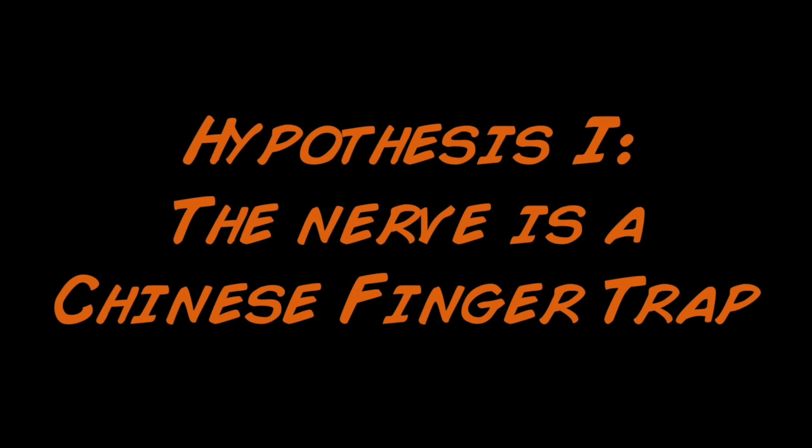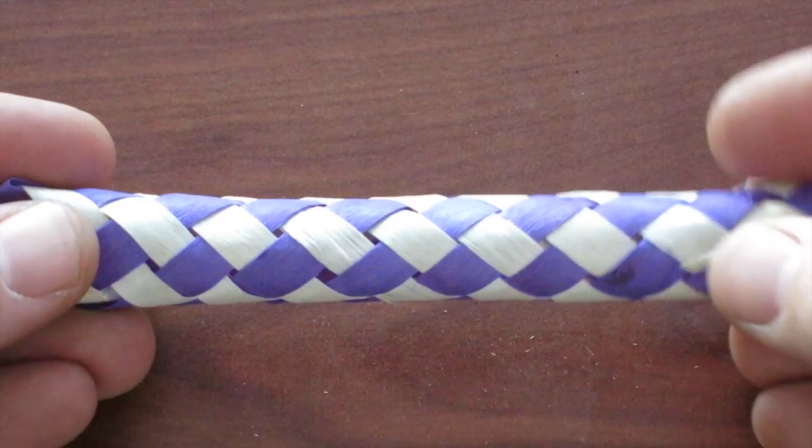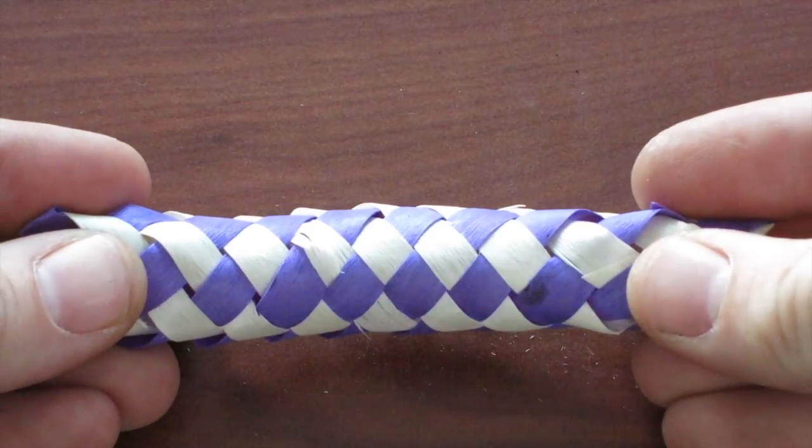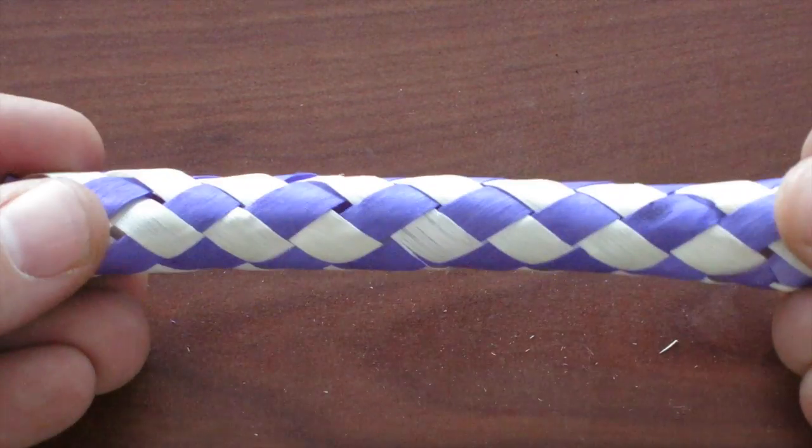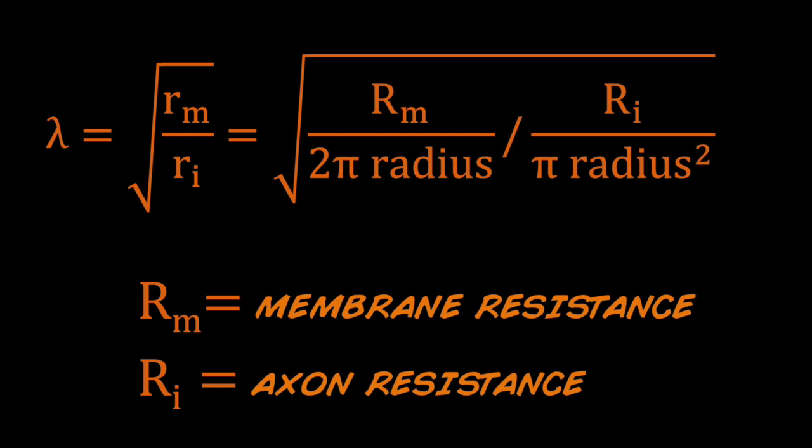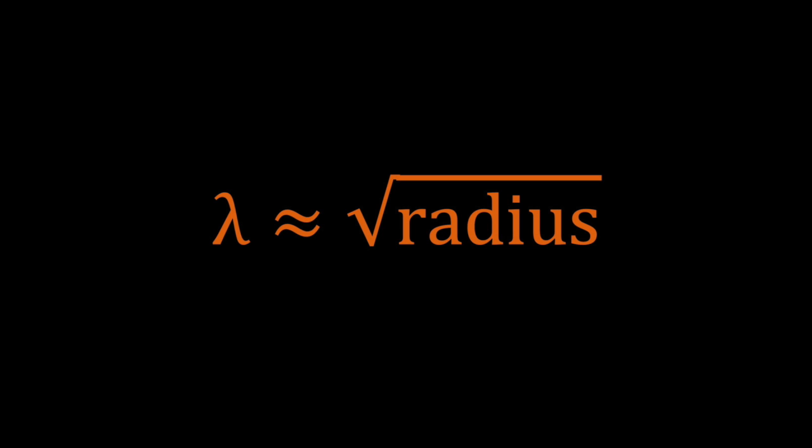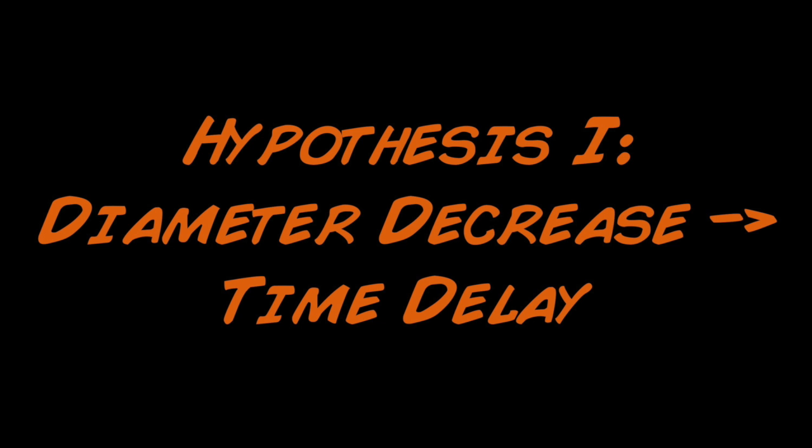Now let us consider one hypothesis, that the nerve is analogous to a Chinese finger trap. As the worm is stretched, the nerve is stretched as well, resulting in a reduced diameter. But what does this reduced diameter mean? If we look carefully at our length constant equations, we will see that it is dependent on radius. The smaller the radius, the smaller the length constant. And the smaller the length constant, the lower the conduction velocity. Thus, if we stretch the worm, we hypothesize that there will be a longer time delay between two points along the nerve.